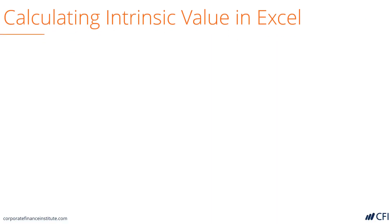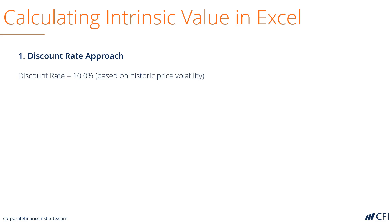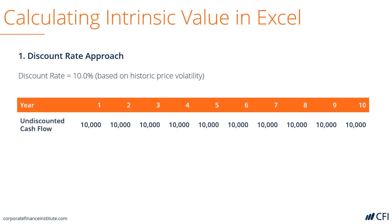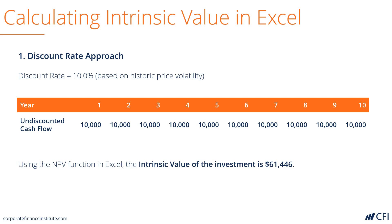So let's look at how we calculate this in Excel using the two approaches. Let's use the discount rate approach and the NPV function, where we have 10 periods of cash flow, each that pay $10,000. Using the NPV function in Excel, a discount rate of 10%, and those cash flows, we get a net present value of $61,446. This is the amount a rational investor would be willing to pay, assuming that all assumptions are correct.